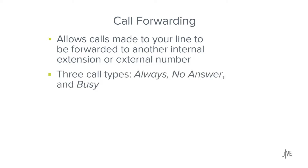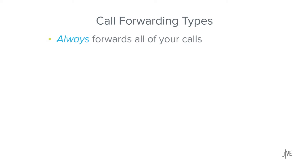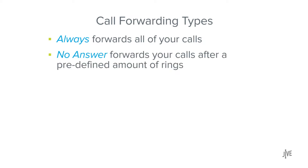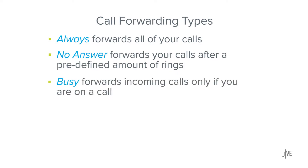There are three different types of call forwarding: Always, No Answer, and Busy. Always forwards all of your calls. No Answer forwards your calls after a predefined amount of rings. And Busy forwards incoming calls only if you are already on a call.